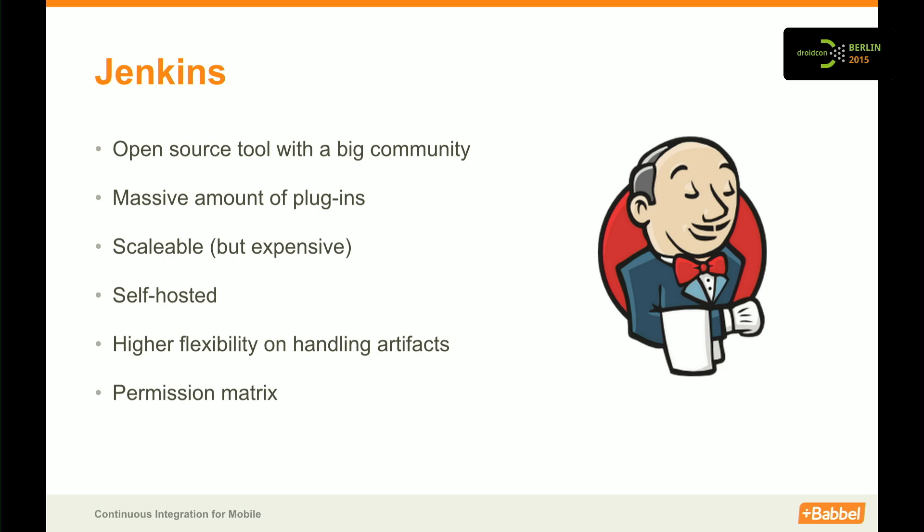You can have a node just for building infrastructure. You can spawn new virtual machines with Puppet and Vagrant, which makes it really flexible. In those virtual machines you can have different simulators and emulators started for different test purposes. Jenkins has high flexibility on artifacts — you can store them on the device and hand them around. You have a really cool permission matrix, which means a job publishing to Google Play doesn't allow everyone to publish. QA can issue their own builds, which reduces a lot of work for developers.